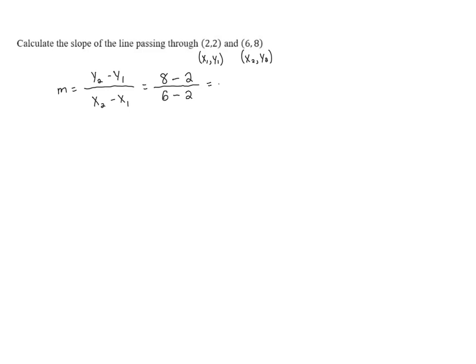Now we can evaluate. 8 minus 2 is 6. And 6 minus 2 is 4. And 6 fourths reduces to 3 halves. So the slope of that line is going to be 3 halves.